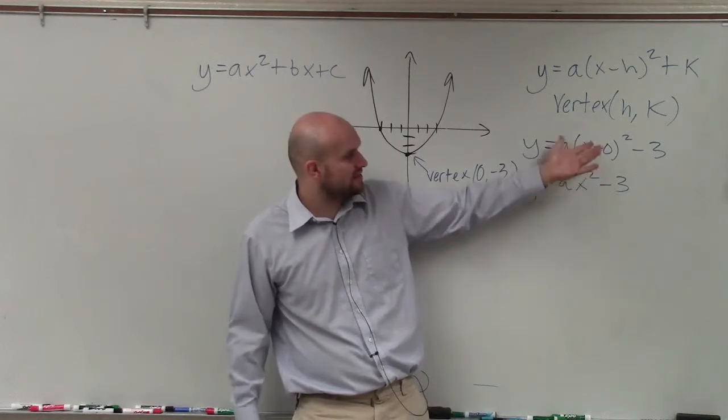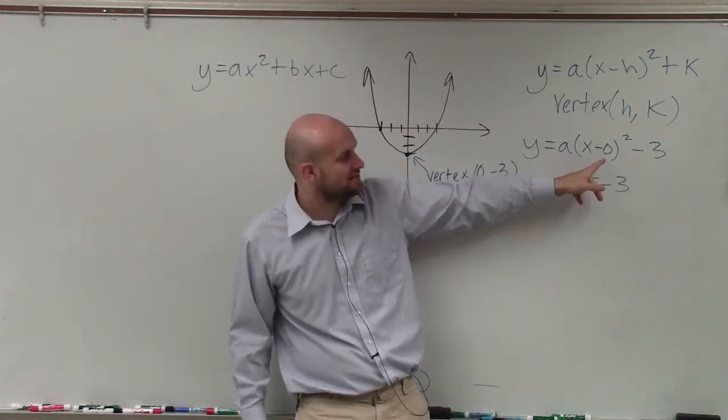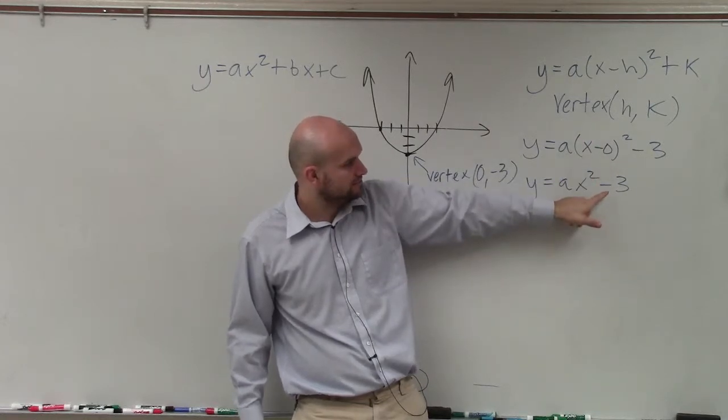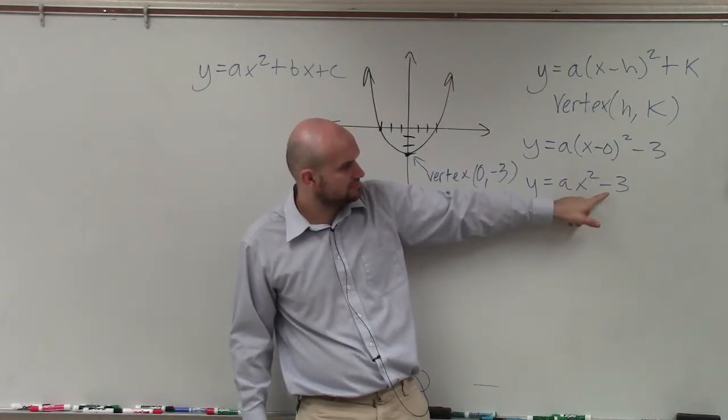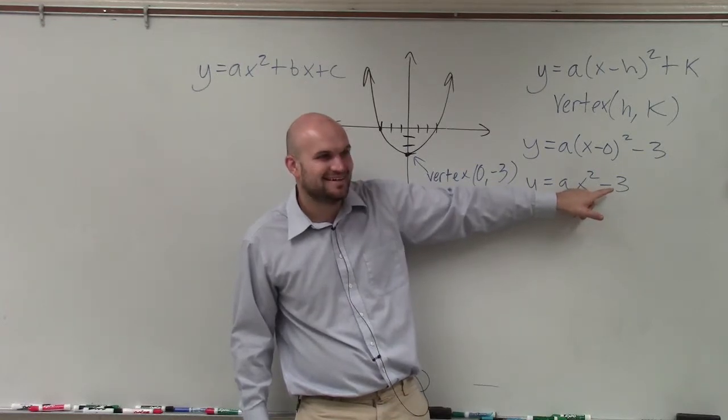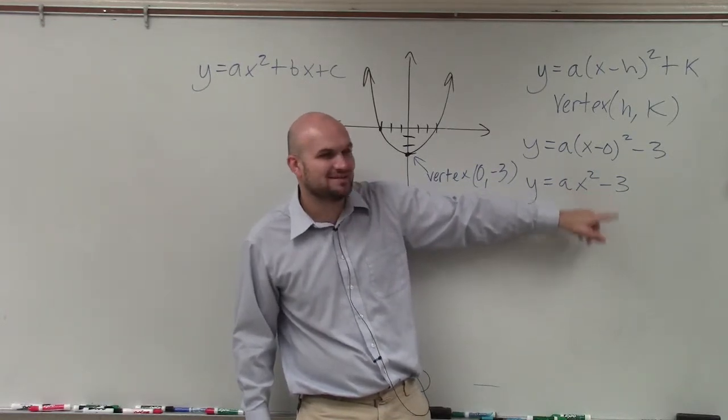So I want you guys to understand, though, that when we plug in the vertex in for h and k, when we plug it in for h and k, we're going to put that as minus 3.